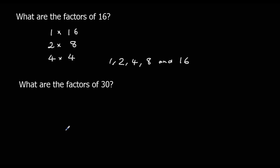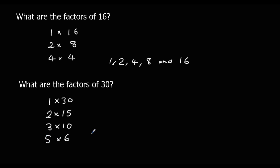The factors of 30. I can have 1 times 30, 2 times 15, 3 times 10. It is not in the 4 times table, but it is in the 5 times table: 5 times 6. I've already got 6, so that means there are no more. So the factors of 30 are 1, 2, 3, 5, 6, 10, 15 and 30.